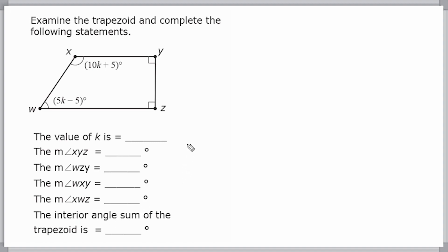Alright, so what we should notice right away is this trapezoid has two right angles, here and here. And we know that right angles have a measure of 90 degrees. Now, this angle right here is x, y, z.